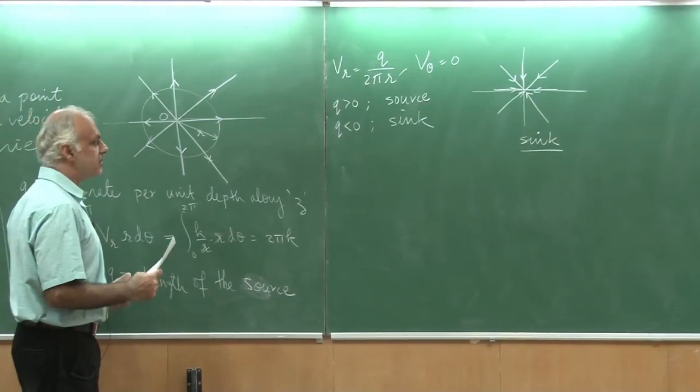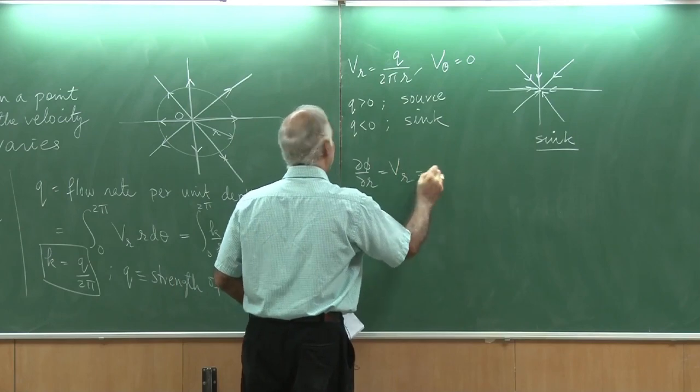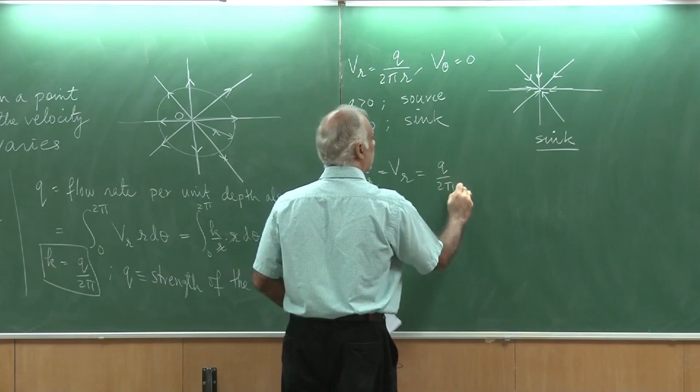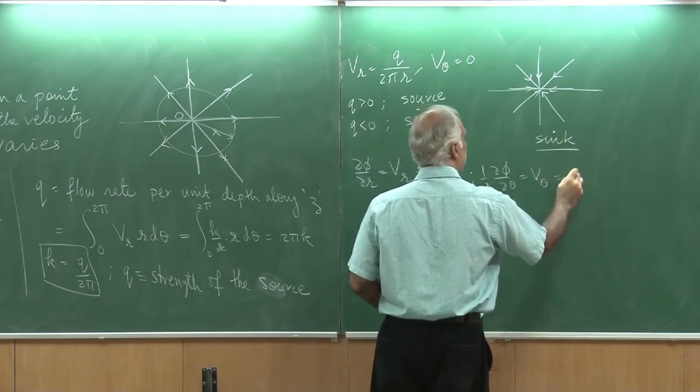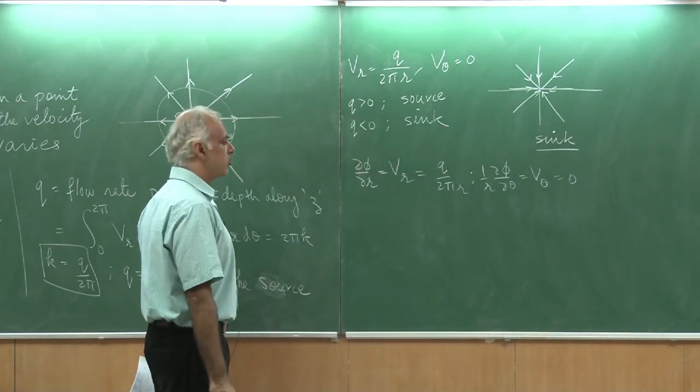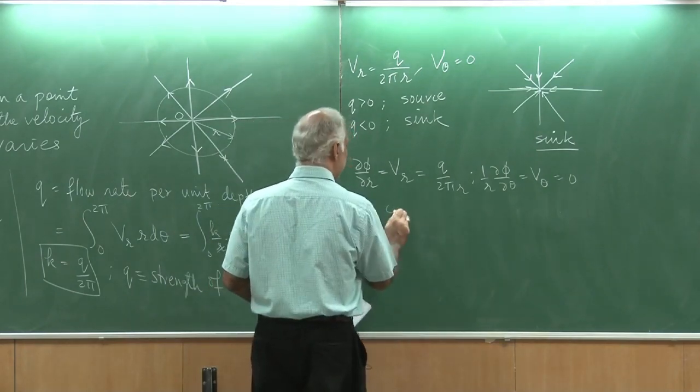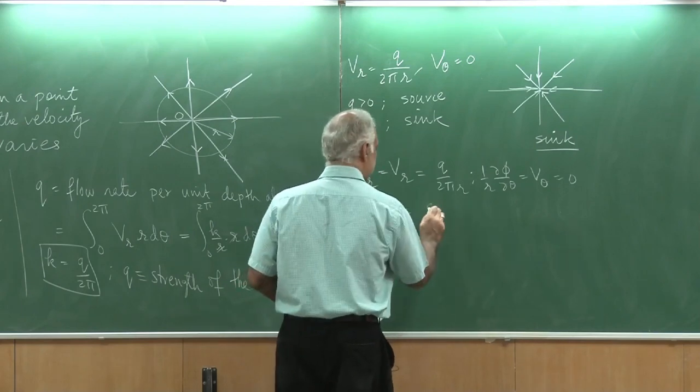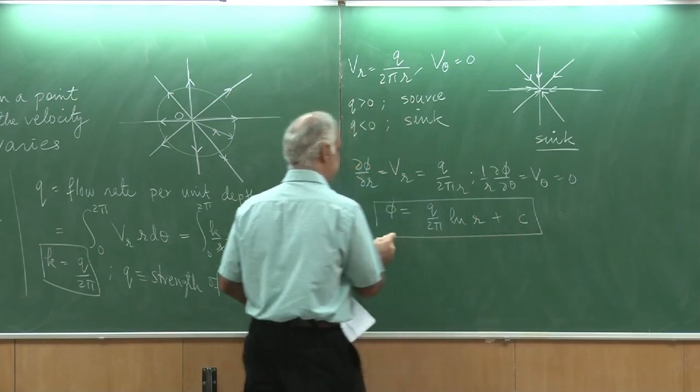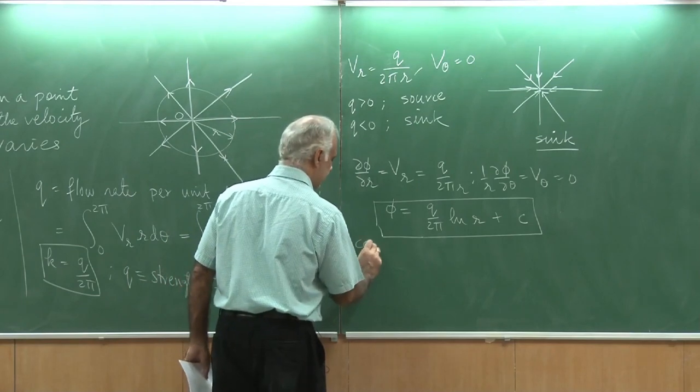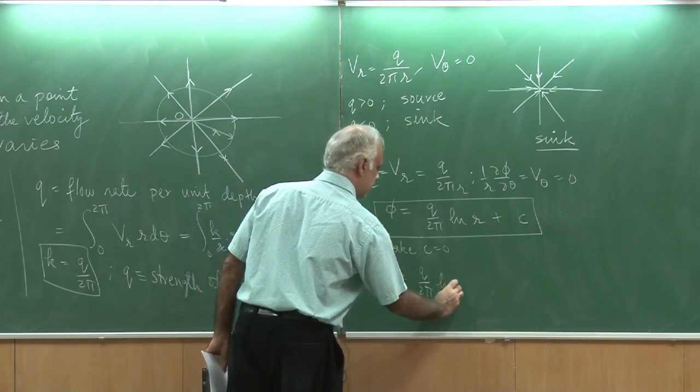We can now try to find out what is the velocity potential for such a flow. We know del phi by del r is actually vr, and that is given as simply q by 2 pi r, whereas del phi by del theta 1 by r is v theta, which in this case is 0. I can integrate these two equations and find out phi in terms of r and theta. If I do that, then I will be able to see that phi is simply given as q by 2 pi natural log of r plus some constant c. I can actually take c equal to 0, and then my phi simply becomes q by 2 pi natural log of r.